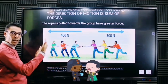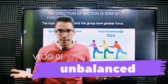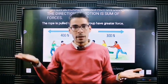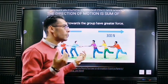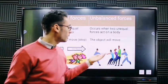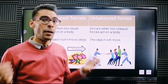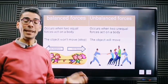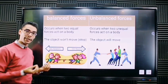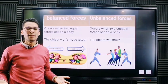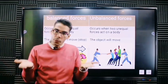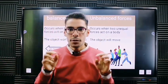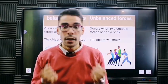This is an unbalanced force — unequal forces acting on an object from different sides. But what if the forces on both sides are equal? Then it's balanced, not unbalanced. If both groups are equal, they are not going to move at all, because both sides cancel each other out.